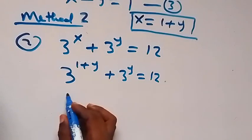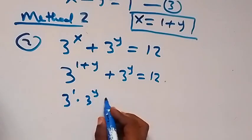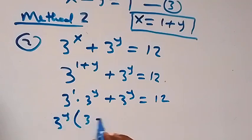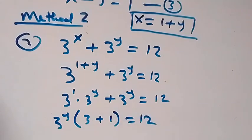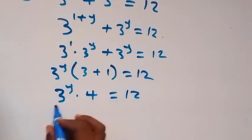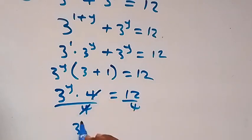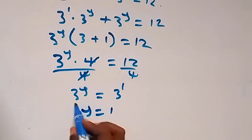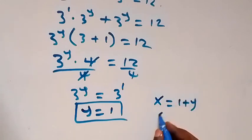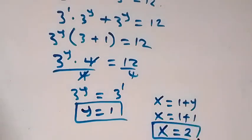Using the law of indices, we separate this as 3 raised to power 1 times 3 raised to power y, plus 3 raised to power y equals 12. Taking 3 raised to power y as a common factor, we get 3 raised to power y times (3 plus 1) equals 12, which is 3 raised to power y times 4 equals 12. Dividing both sides by 4, we have 3 raised to power y equals 3 raised to power 1. Same base, so y equals 1. From equation 3, x equals 1 plus y equals 1 plus 1, so x equals 2. Same result: x equals 2 and y equals 1.